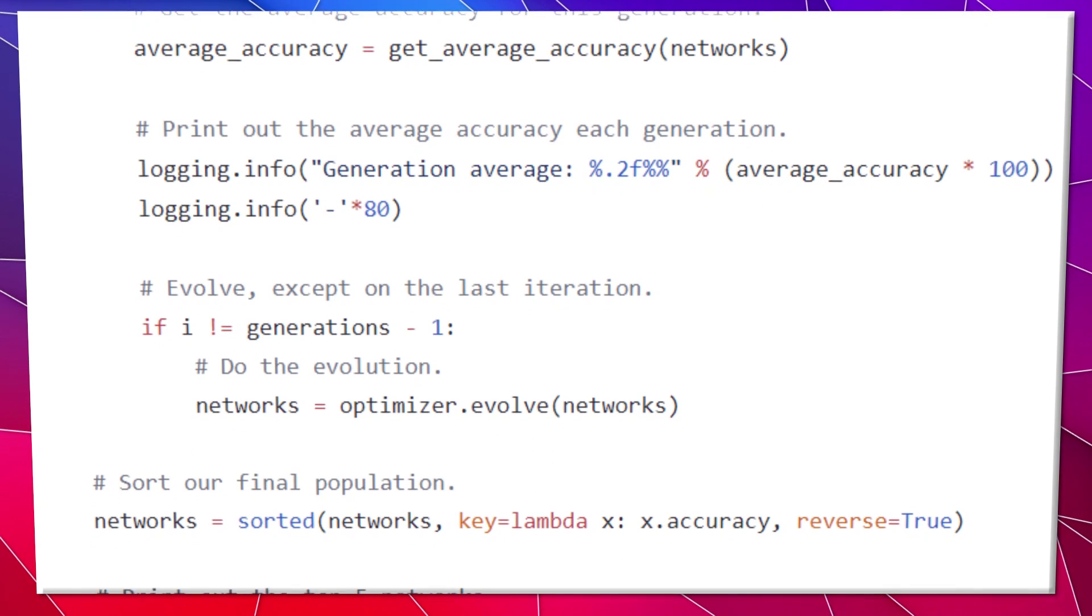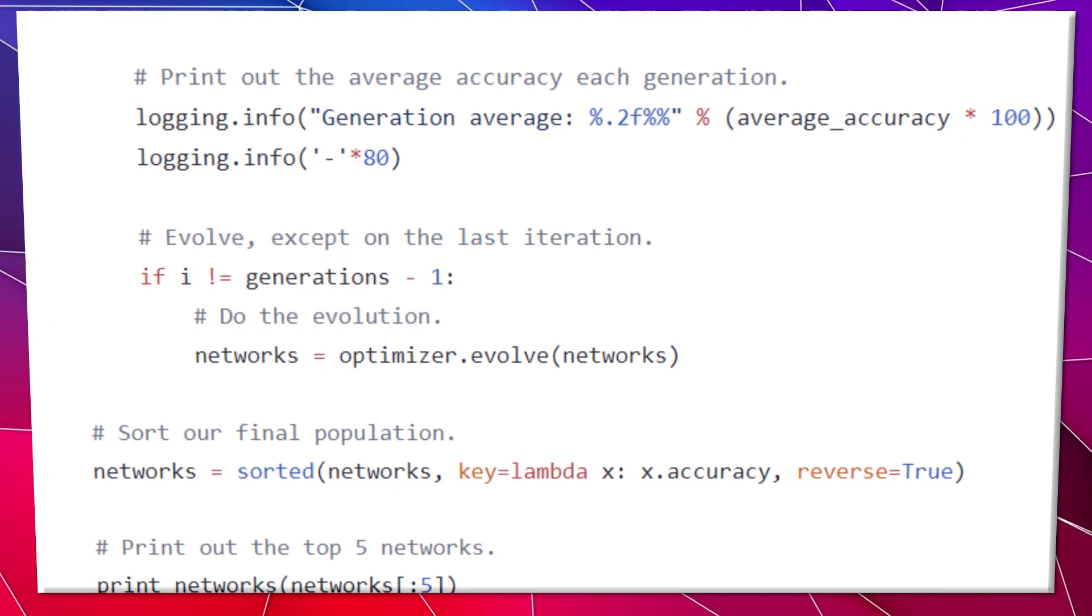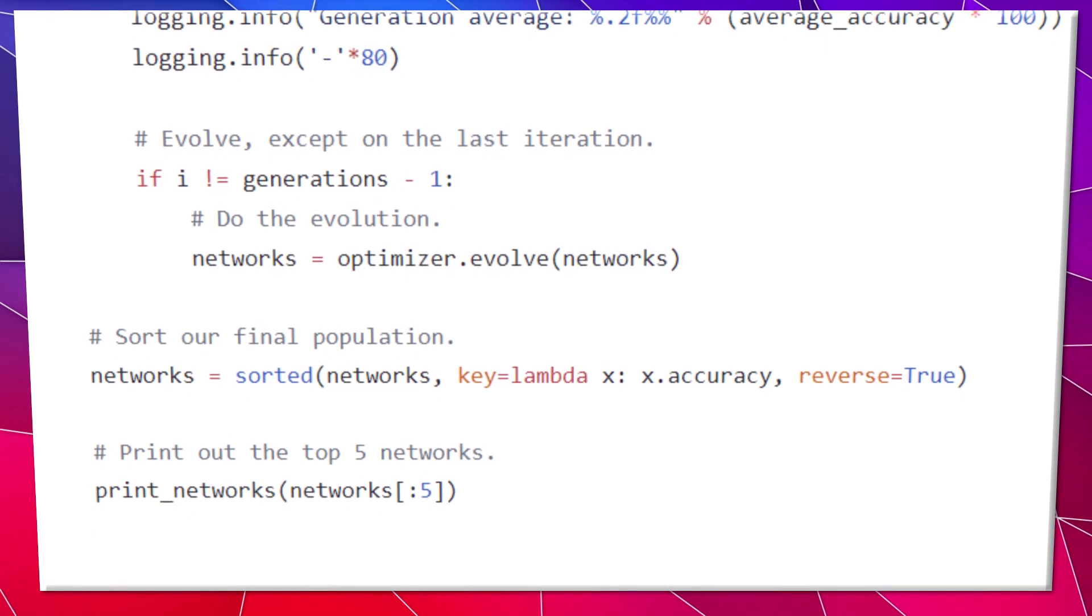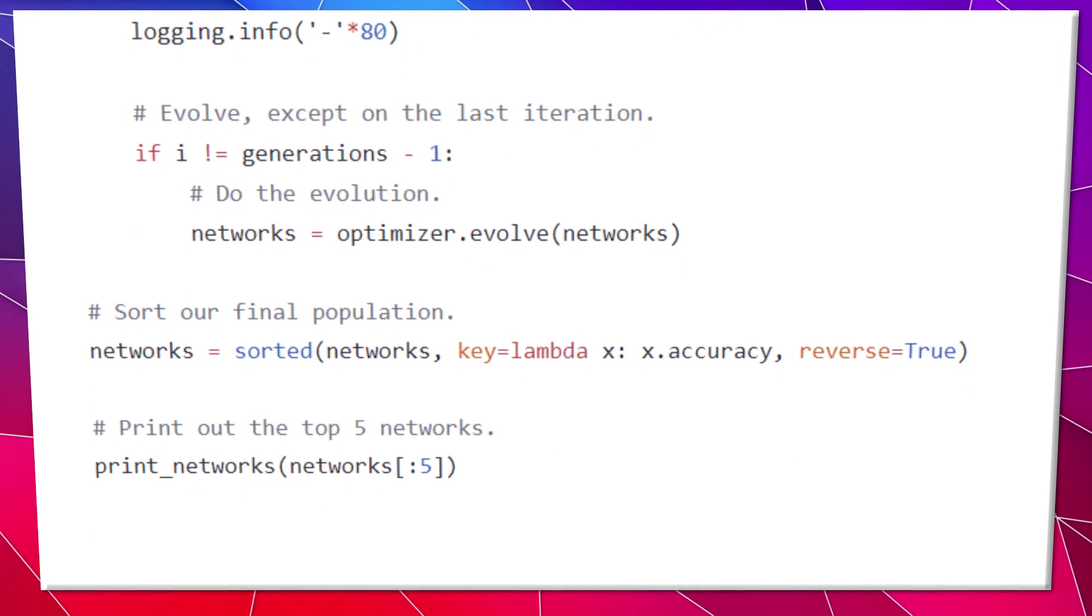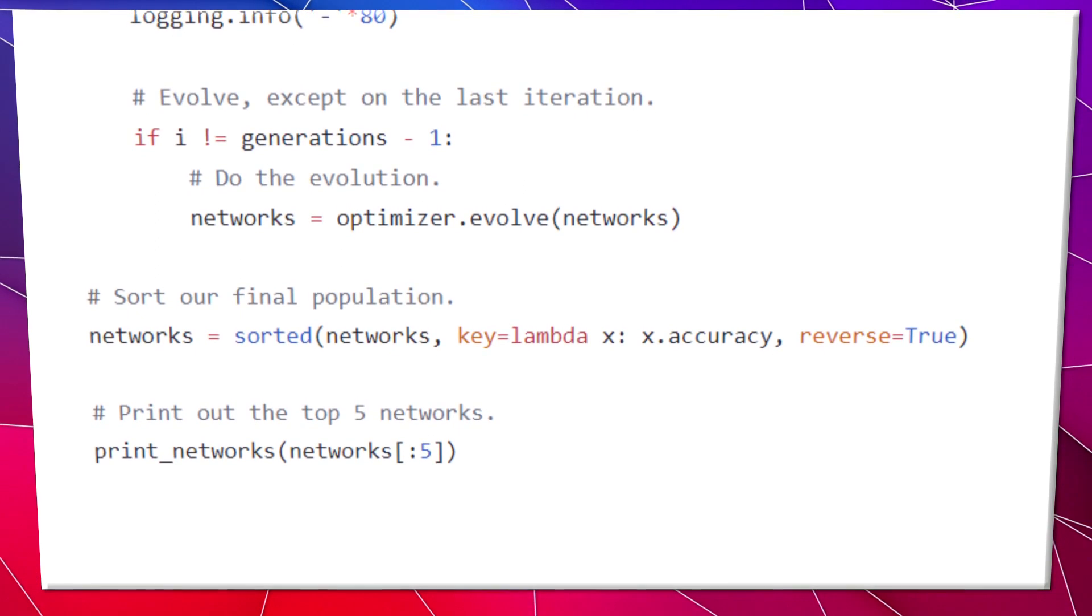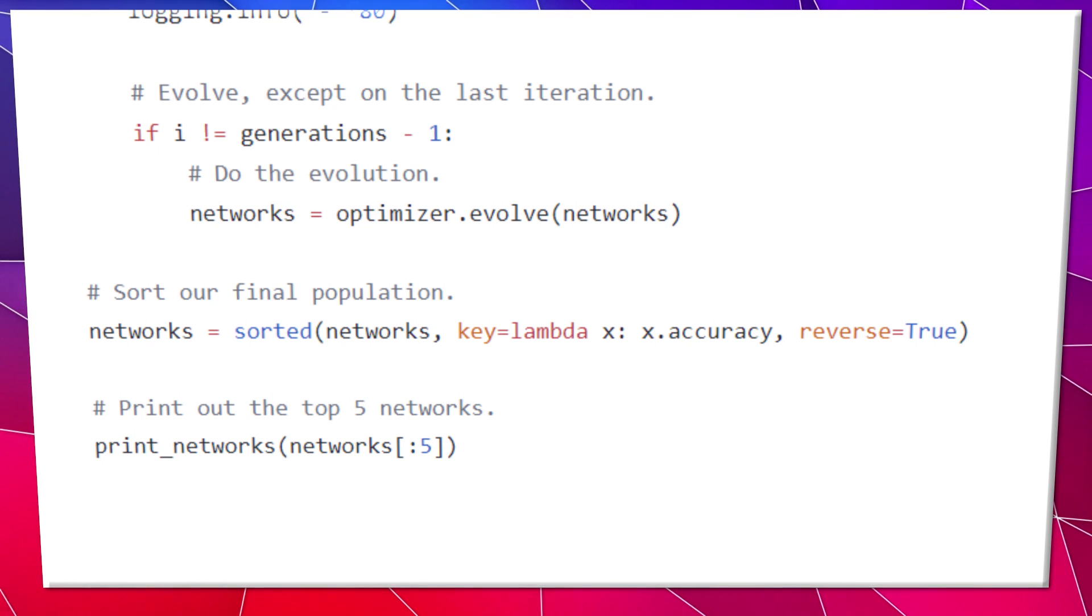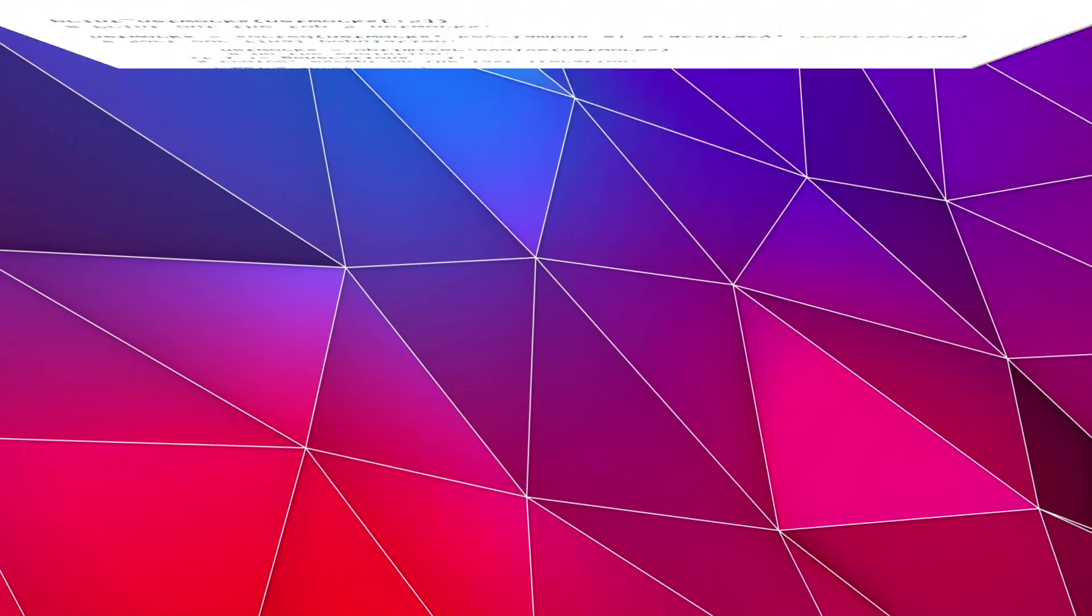Now we're going to breed our top picks. In our neural network case, we'll create a new network or child by combining a random assortment of parameters from its parent networks. So a child could have the same number of layers as one parent and the rest of its parameters are from another parent. Another child could have the opposite. This mirrors how biology works in real life and helps our algorithm converge on an optimized network.